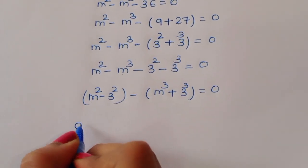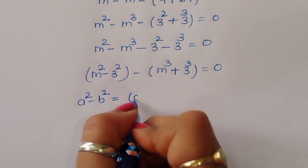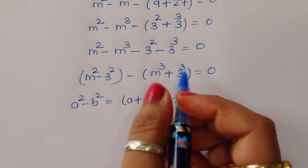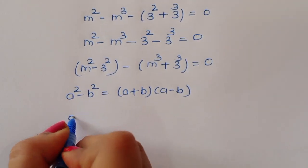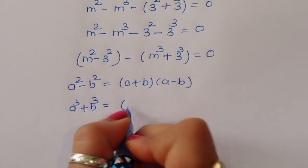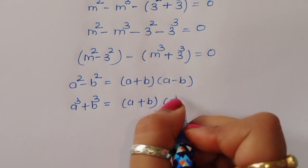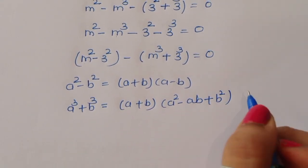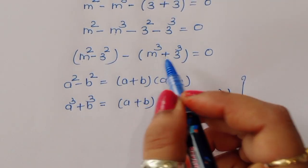Now this is in the form of a squared minus b squared, where a squared minus b squared equals (a plus b)(a minus b). And this part is a cubed plus b cubed, where the formula is a cubed plus b cubed equals (a plus b)(a squared minus ab plus b squared). Using these two formulas we will expand.